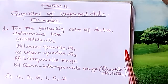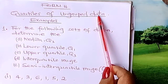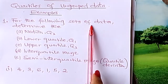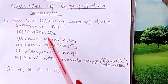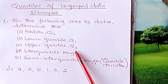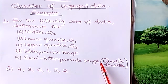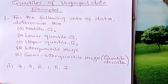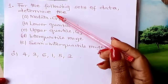Welcome learners to Form 4 Mathematics. We are looking at quartiles of ungrouped data. For the following sets of data, you are told to determine the median (which is the same as Q2), lower quartile Q1, upper quartile Q3, interquartile range, and semi-interquartile range, which is also referred to as quartile deviation. It is good to know both terms.